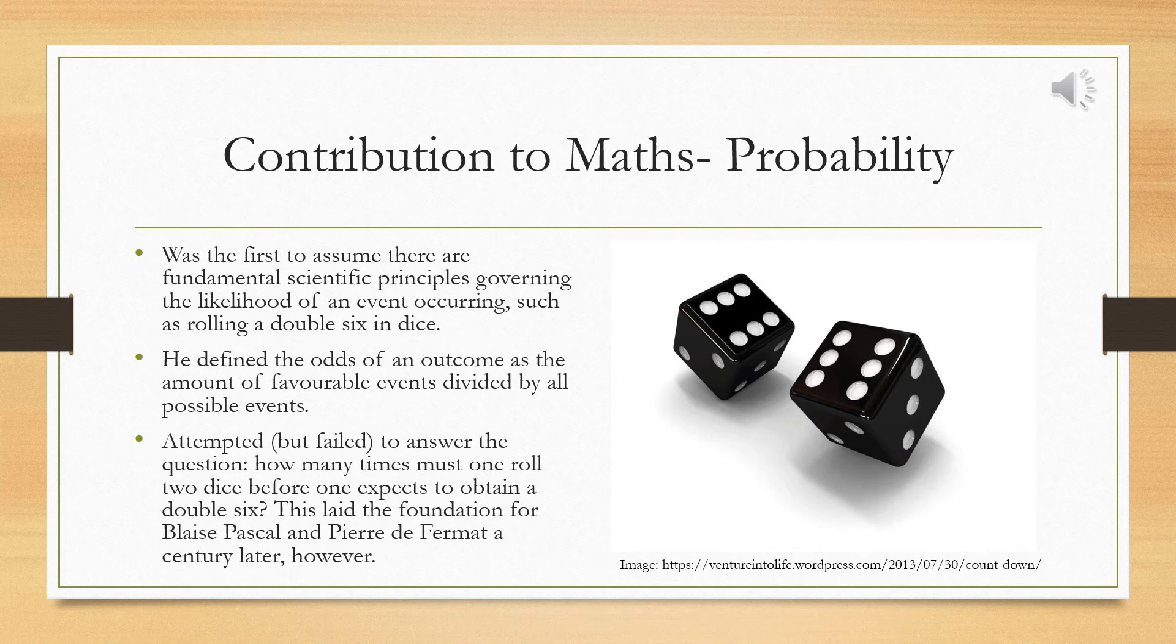Cardano began his studies of probability by assuming there are fundamental scientific principles governing the likelihood of obtaining an elusive double six in dice rolling, rather than just divine chance or luck. His major contribution was that he defined the odds of an outcome as the favorable events divided by all possible events, and he was the first to quantify chance and statistics.